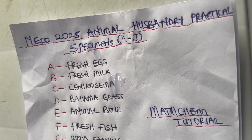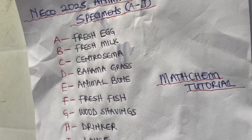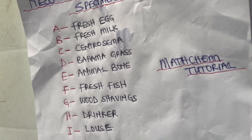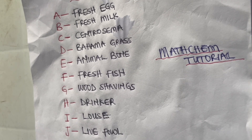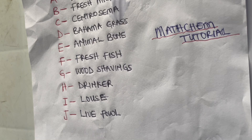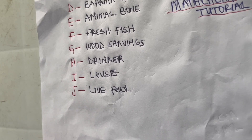Specimen F is fresh fish — not a frozen one, just a fresh one. Specimen G is wood shaving, also called sawdust. It is usually spread on the floor of a poultry pen before placing the fowl. Specimen H is a drinker — anything used to give animals water, also called a water trough. Specimen I is a louse; the plural is lice (L-I-C-E), and it is an ectoparasite.